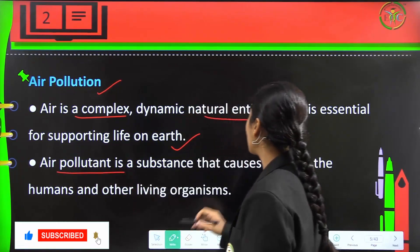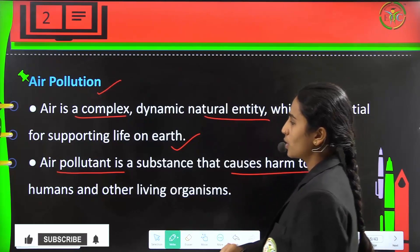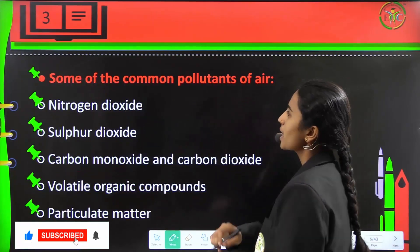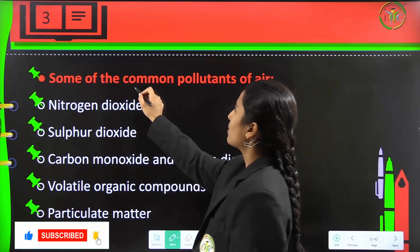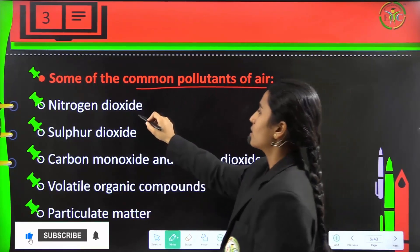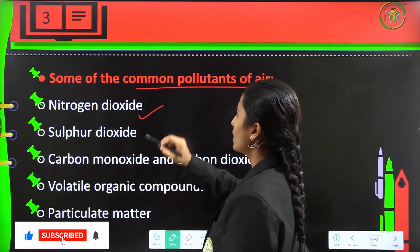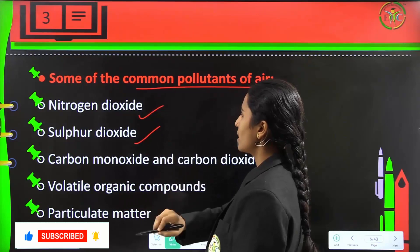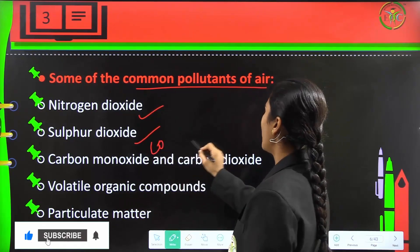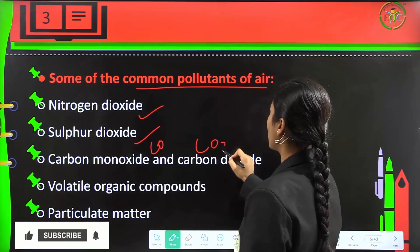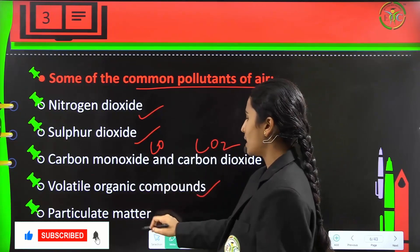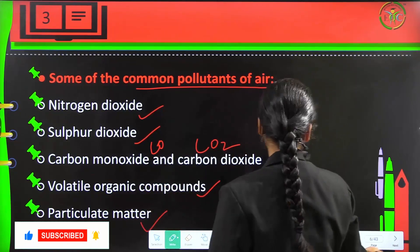An air pollutant is a substance which will cause harm to humans and other living organisms. Some of the common pollutants of air are NO2 which is nitrogen dioxide, sulphur dioxide SO2, carbon monoxide CO, CO2 carbon dioxide, volatile organic compounds, and particulate matter.